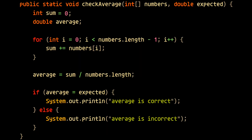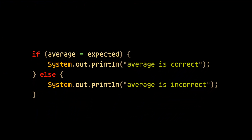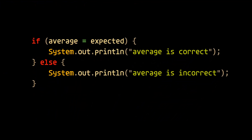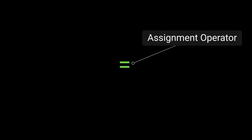Now at first glance, this block of code here looks correct — it reads correctly, right? If the average is equal to the expected average, then we'll let the client know that the average is correct. But the problem is we're trying to use the assignment operator to check for equality. If we want to check for equality, we must use a double equal sign.